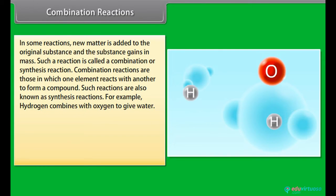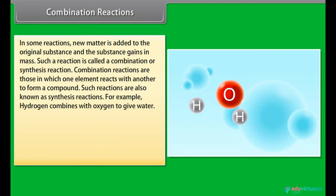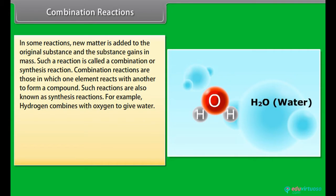Combination reactions: In some reactions, new matter is added to the original substance and the substance gains in mass. Such a reaction is called a combination or synthesis reaction. Combination reactions are those in which one element reacts with another to form a compound. For example, hydrogen combines with oxygen to give water: 2H2 plus O2 gives 2H2O. 2Cu plus O2 gives 2CuO. 4Fe plus 3O2 gives 2Fe2O3, rust.